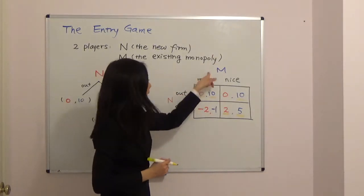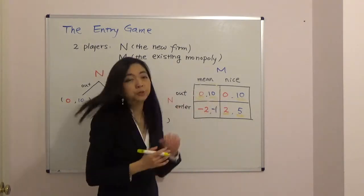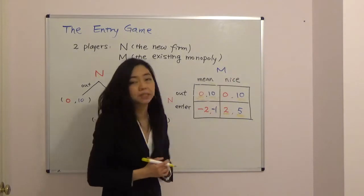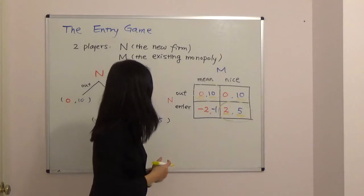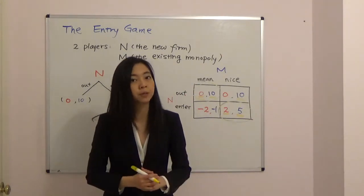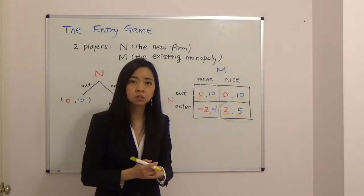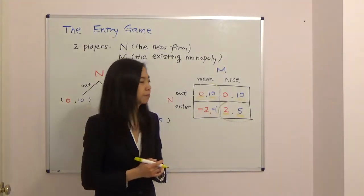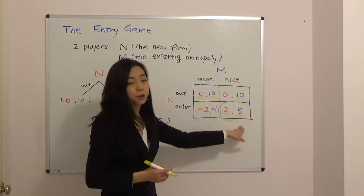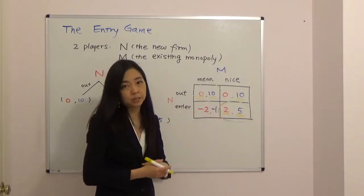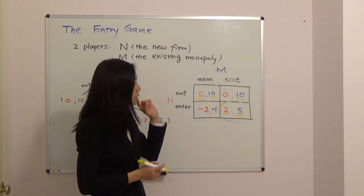We now have two Nash equilibria. One is that the new firm chooses to stay out and the monopoly plays mean. The other is that the new firm chooses to enter and the monopoly plays nice. Both make intuitive sense: if the monopoly threatens to be mean, the new firm stays out; if the monopoly says it will be nice, the new firm freely enters.